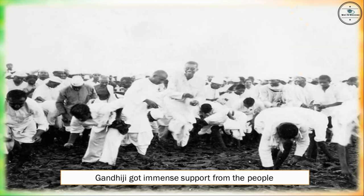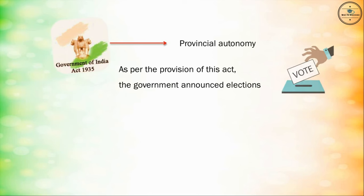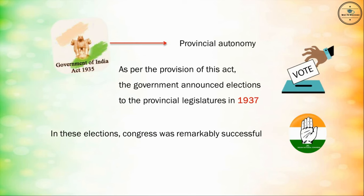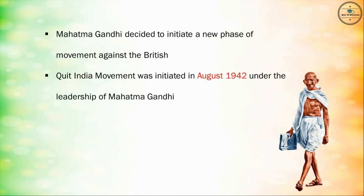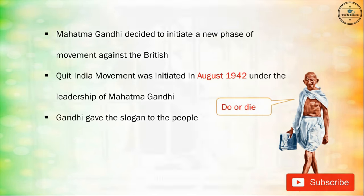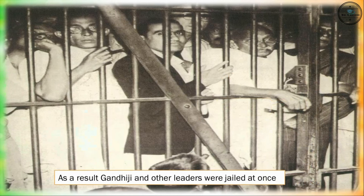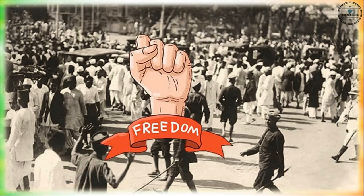Gandhiji got immense support from the people. The Government of India Act of 1935 prescribed provincial autonomy, and elections to the provincial legislatures were announced in 1937. Congress was remarkably successful in these elections. The Quit India movement was initiated in August 1942 under the leadership of Mahatma Gandhi. Gandhi gave the slogan 'Do or Die.' As a result, Gandhiji and other leaders were jailed at once. But the movement spread, and finally the British accepted the demand for freedom by the Indians.